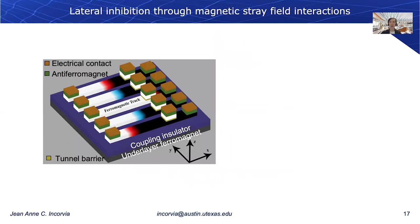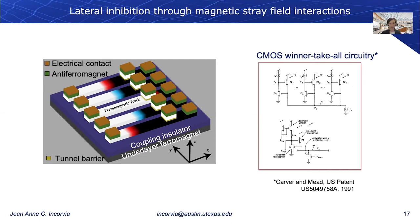This domain wall MTJ neuron can have inherent lateral inhibition by making use of the stray magnetic field interactions between neurons. Lateral inhibition is an important neuronal feature in biology where winning neurons can impede the firing of nearby neurons, helping to reduce errors in information processing. We can imagine our domain wall tracks aligned side-by-side, where the center neuron with its domain wall farthest ahead impedes the motion of domain walls in nearby wires. Today lateral inhibition has been implemented using bulky additional CMOS circuitry, taking a lot of area. Our main accomplishment is implementing it at the device-inherent level.